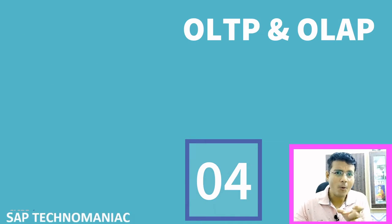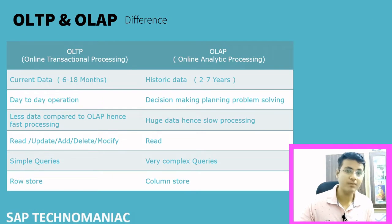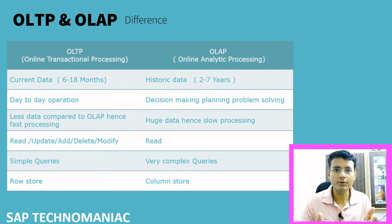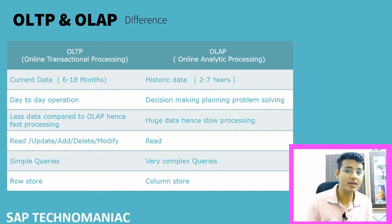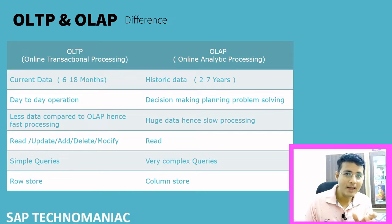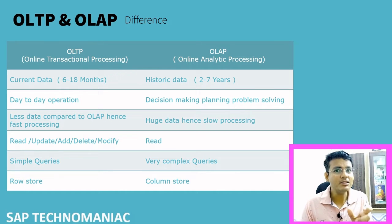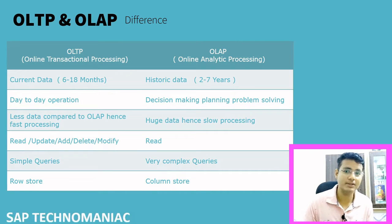So what is this OLTP and OLAP? First, the full form: OLTP means Online Transactional Processing, and OLAP means Online Analytical Processing.